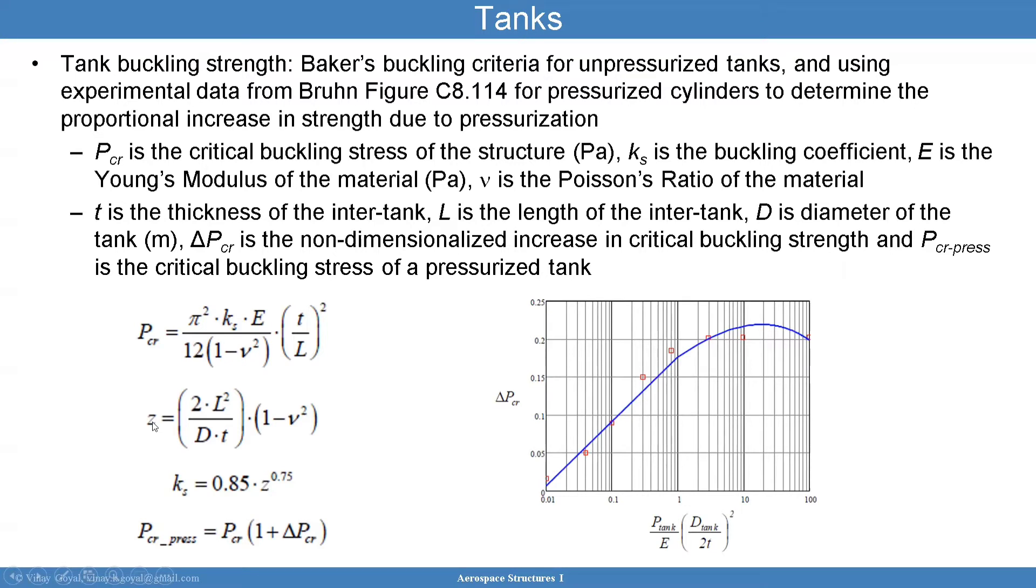Then you have to calculate a curvature parameter Z. So you have 2L squared over D the diameter of the tank times T and then one minus nu squared. Once you get Z you plug it in to get Ks. So this is fully known.